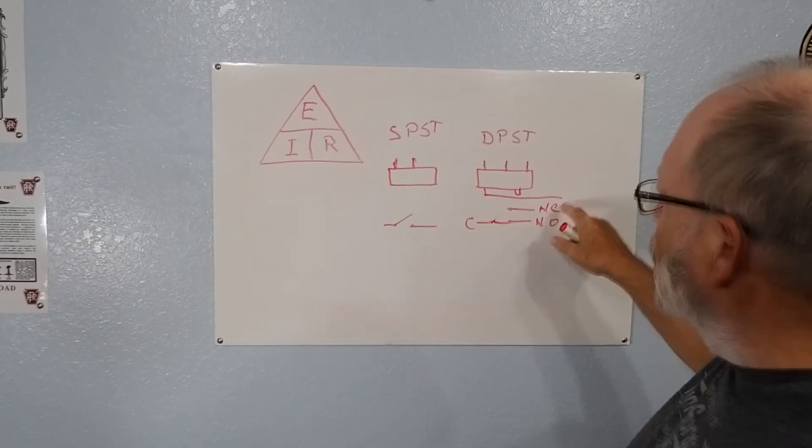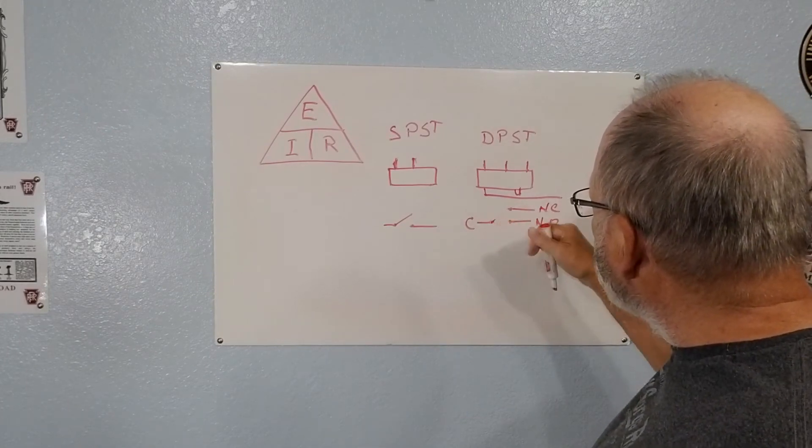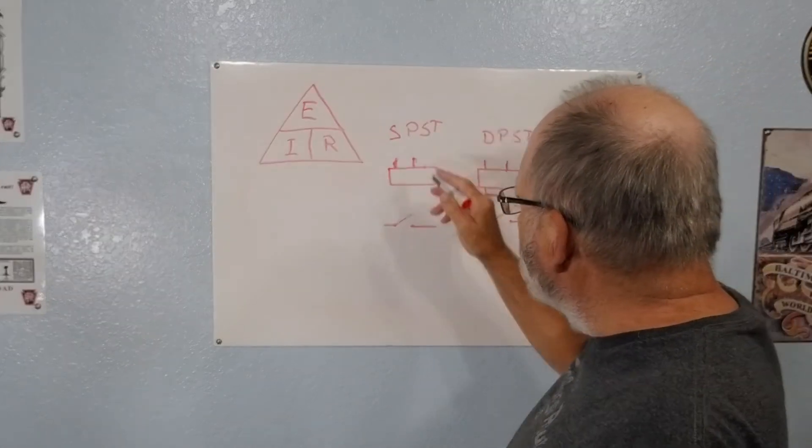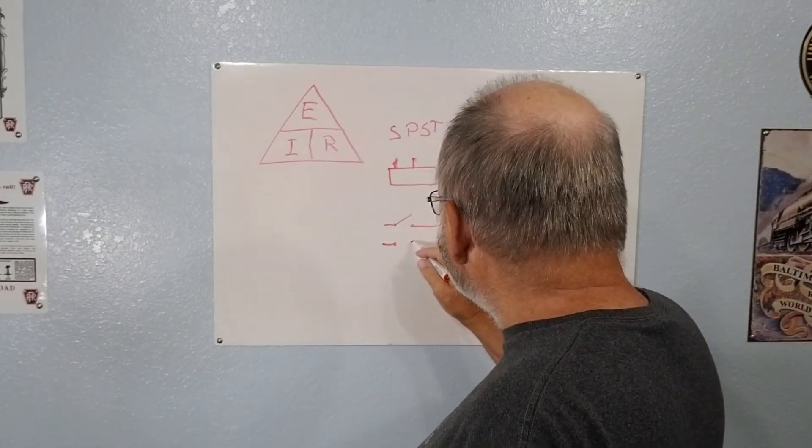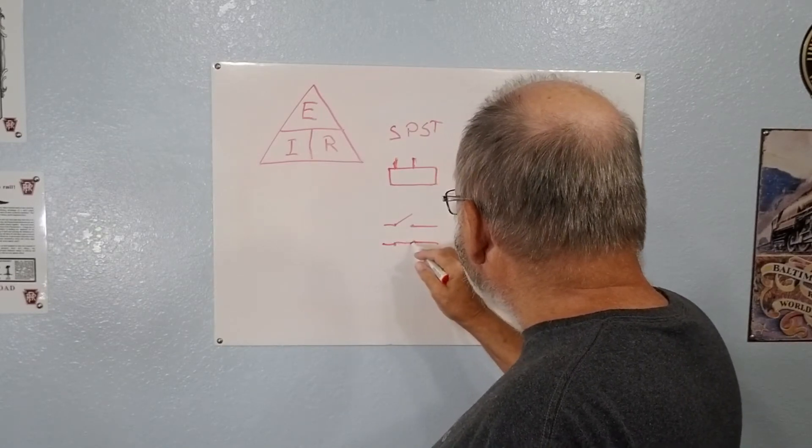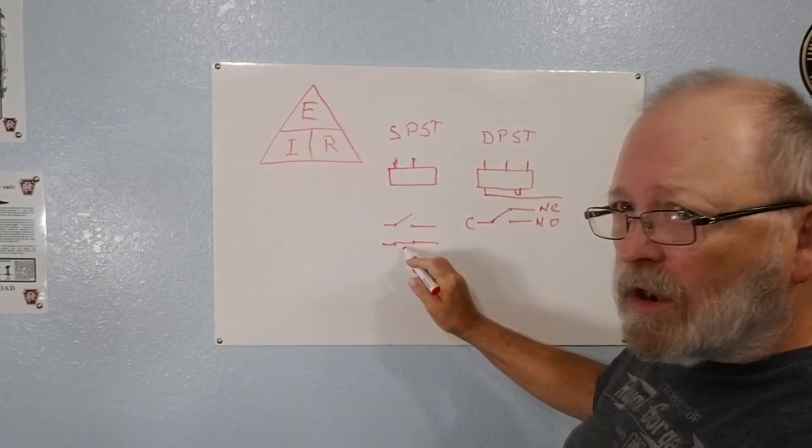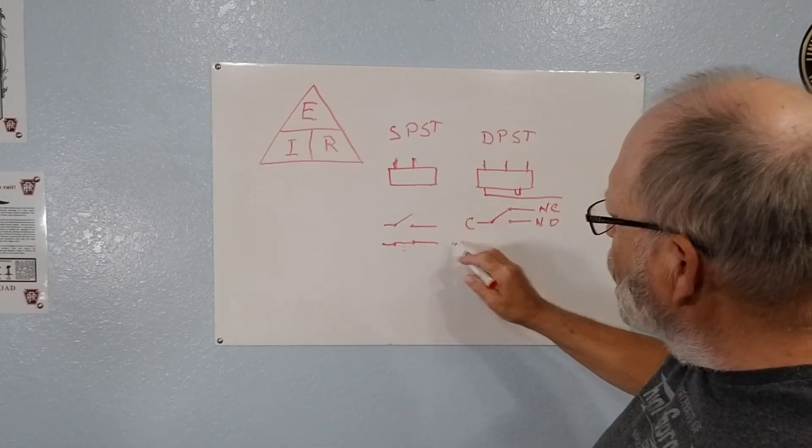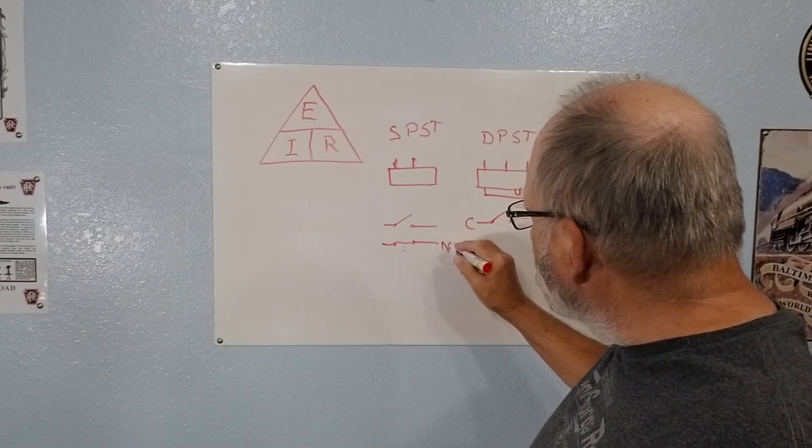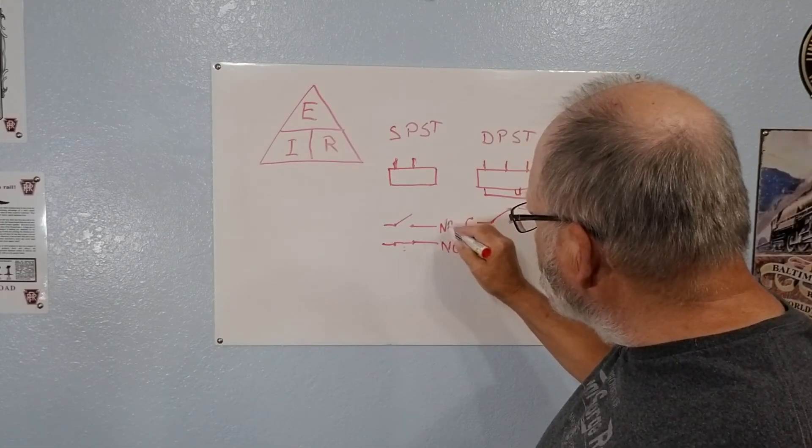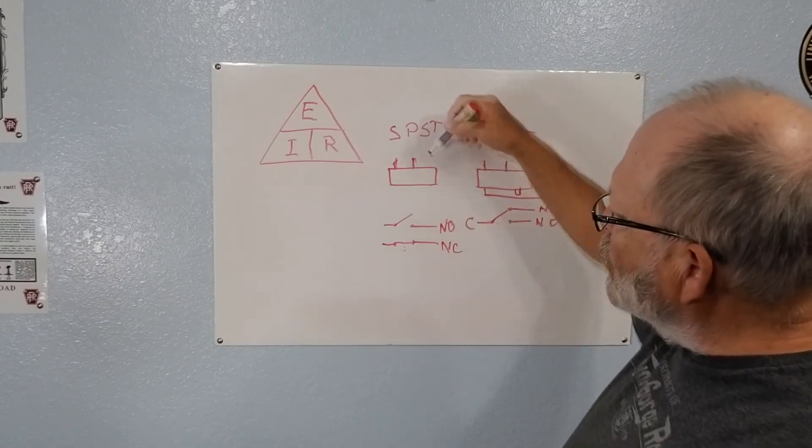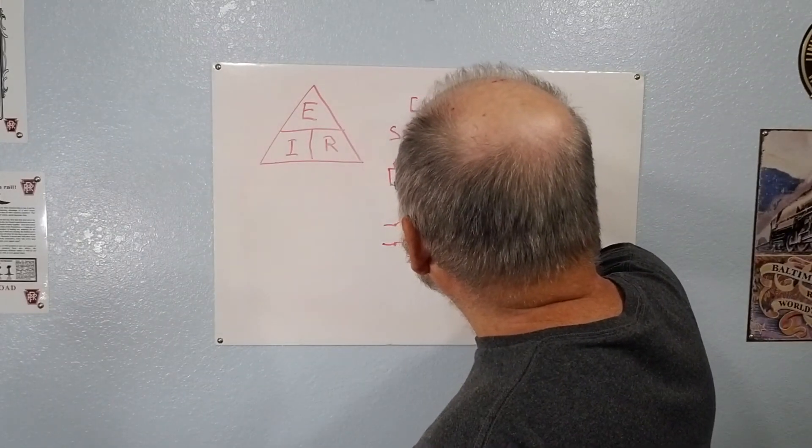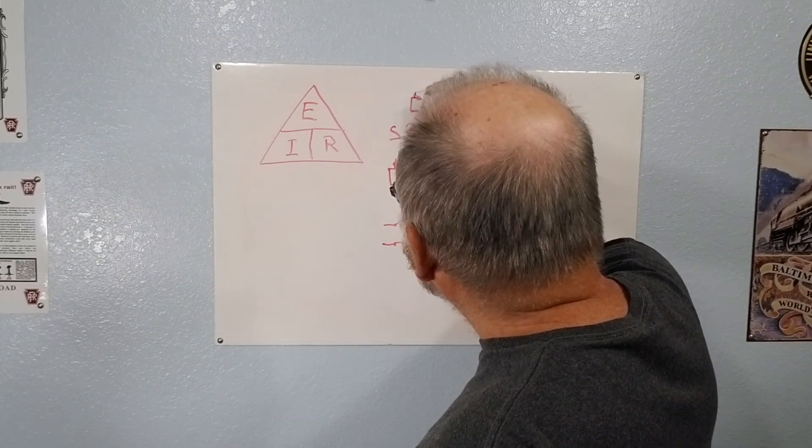Also you have a normally closed switch. On a normally closed switch you have continuity going through there. So this is normally closed, this is a normally open switch. Most of them are normally open switch, it could be a push button.